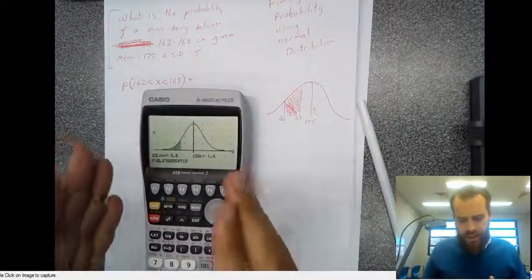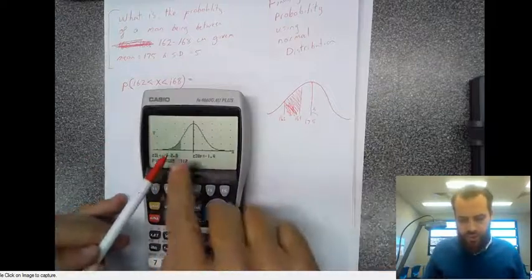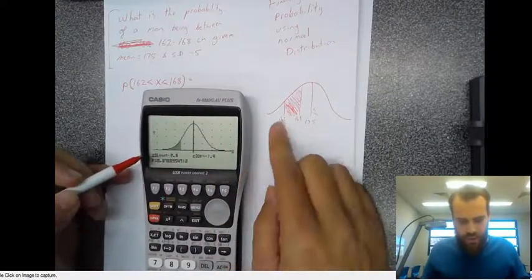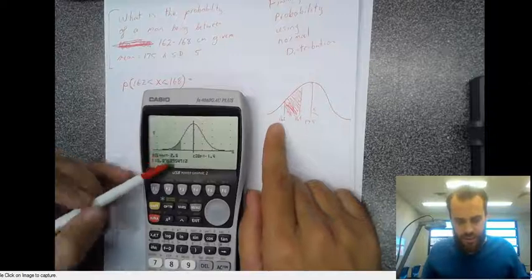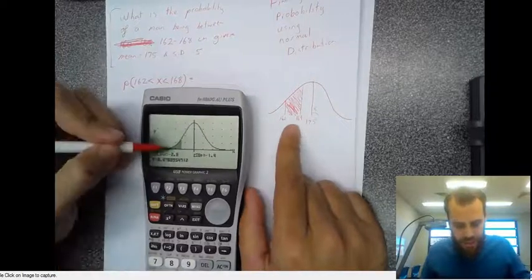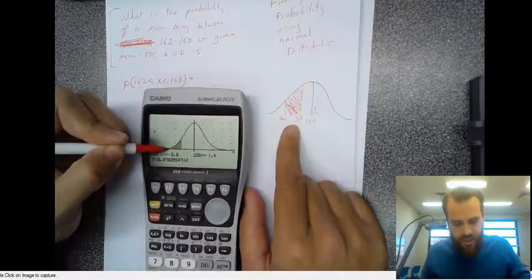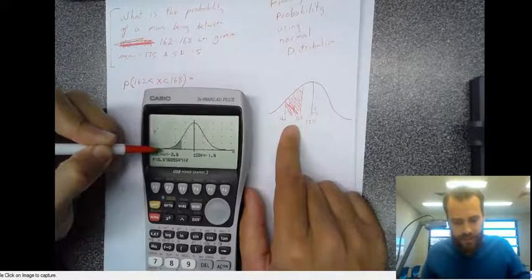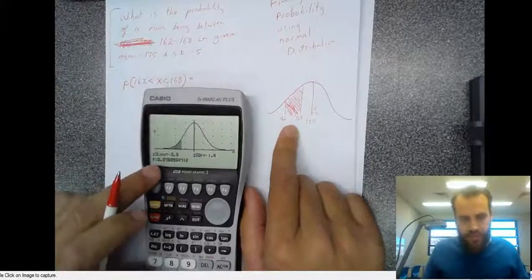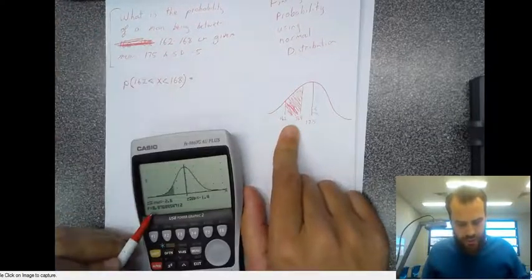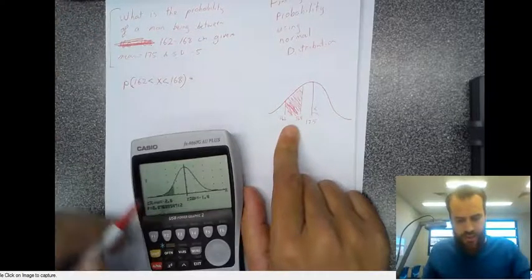Now, it's kind of hard to see because the drawing on here is different to the drawing here. But we've gone a lower of 162, an upper of 168. It's actually from here to here. There's a little bit of blank space just in there. You're going to have to trust me on that. The probability of that happening is right down the bottom here. 0.076.